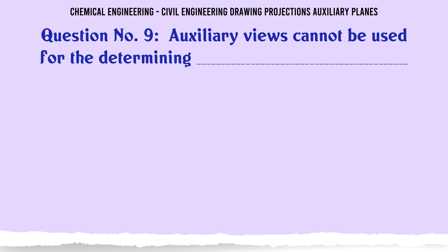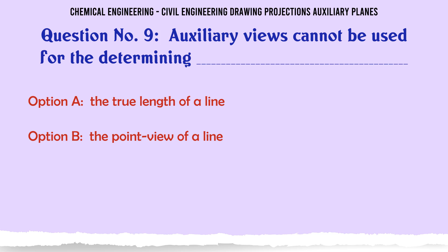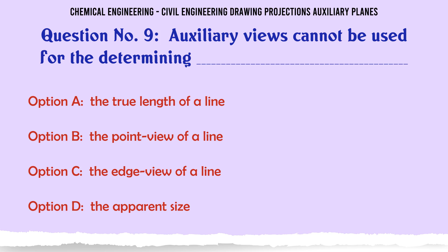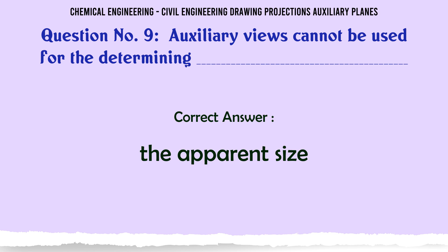Auxiliary views cannot be used for determining: A) The true length of a line, B) The point view of a line, C) The edge view of a line, D) The apparent size. The correct answer is D, Apparent size.